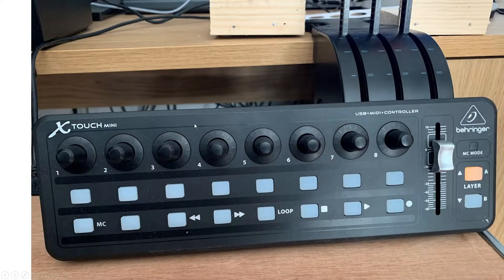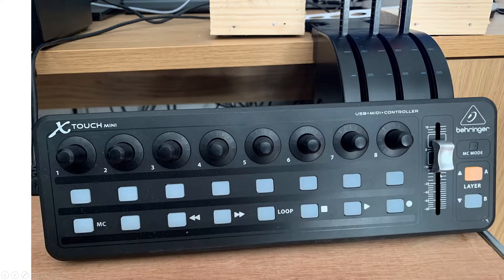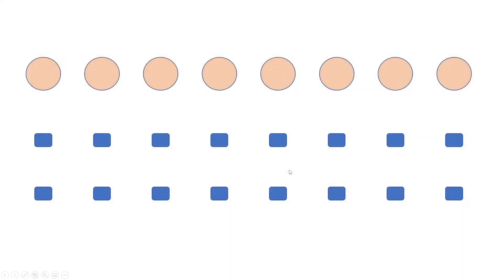This is the X-Touch Mini. It's got eight rotary controllers and each rotary controller is a push switch as well, and we've got 16 further push switches. In fact there are two layers, two banks, A and B, so we can allocate two functions to every single controller or push switch, so there's quite a lot that we can do with this. And this is the template I'm going to use to record what I've allocated each switch or controller to do.